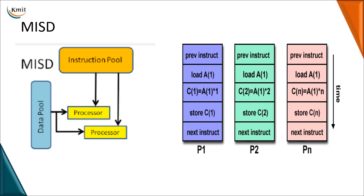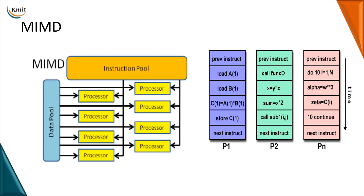For Multiple Instruction Single Data (MISD), the data is the same but the instructions change. For example, you have a single data value a[1] and you perform different operations — multiplying by 1, 2, and n. The instruction changes while the data stays the same. For Multiple Instruction Multiple Data (MIMD), both the instructions and the data are different — multiple instructions and multiple different inputs. These are the various taxonomies or parallel approaches we'll be using. We'll move on to the next topic in the next session.